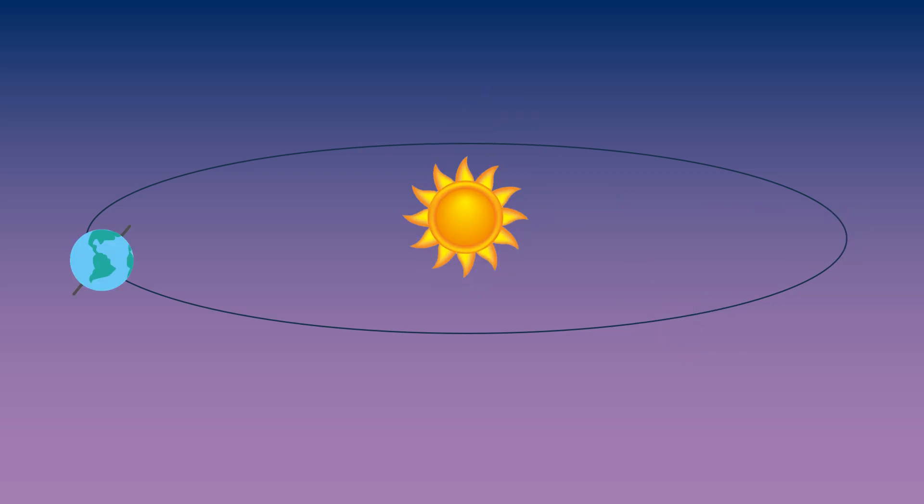It takes one year for Earth to revolve around the sun. And during this time, each hemisphere experiences different weather changes, associated with the amount of sunlight and warmth it receives.